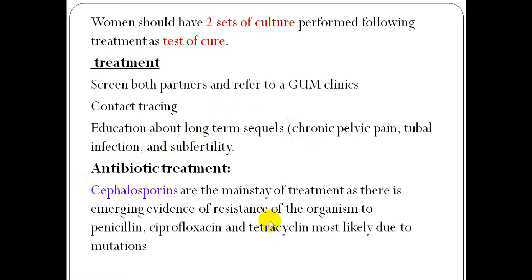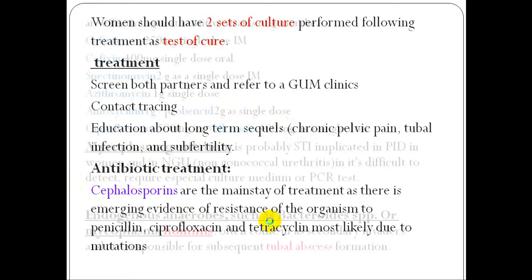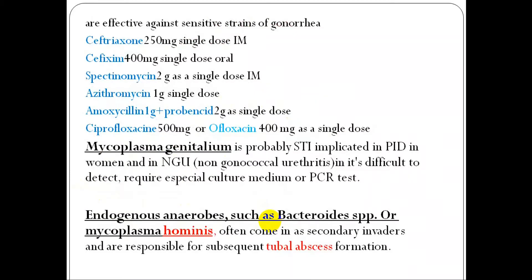Antibiotics for gonorrhea according to sensitivity include: cephalosporins, ampicillin, ceftriaxone, spectinomycin, azithromycin, amoxicillin, and ciprofloxacin, chosen according to the sensitivity of the test result.